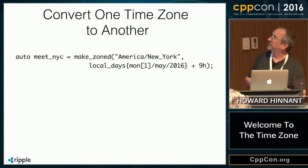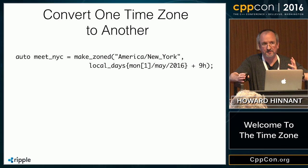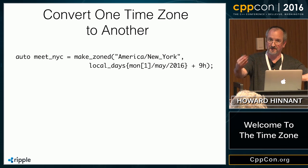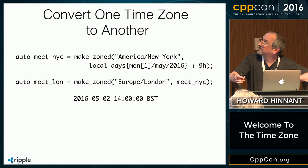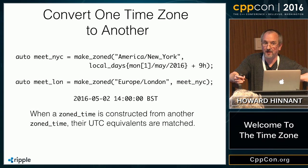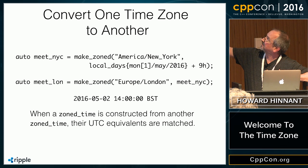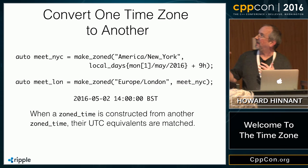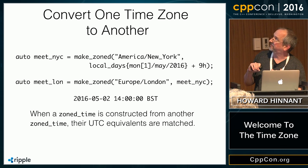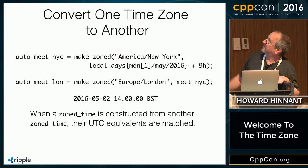Let's say we've got a meeting in New York City on the first Monday of May 2016 at 9 a.m. We could create a zone_time like that, but let's say we want a video conference with partners in London. We need to send them their local time, not ours. You can construct a zone_time with a string and another zone_time. The UTC equivalents of the two times are equated, and this would print out May 2nd, 2016, 14:00 hours, British Summer Time — which is the exact same moment as the first Monday of May 2016, 9 a.m. in America/New_York.